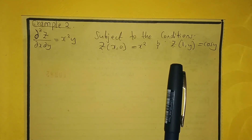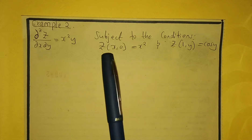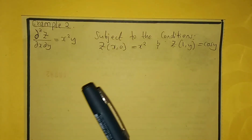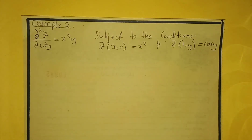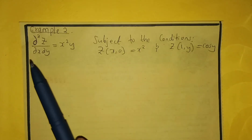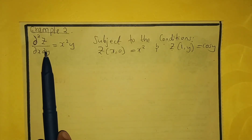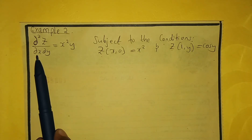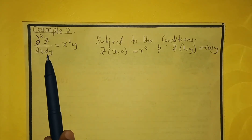Contrary to example number 1, in this example we have been given two conditions. Now how are we going to apply these two conditions? We are going to integrate partial with respect to x once and then partial with respect to y once.